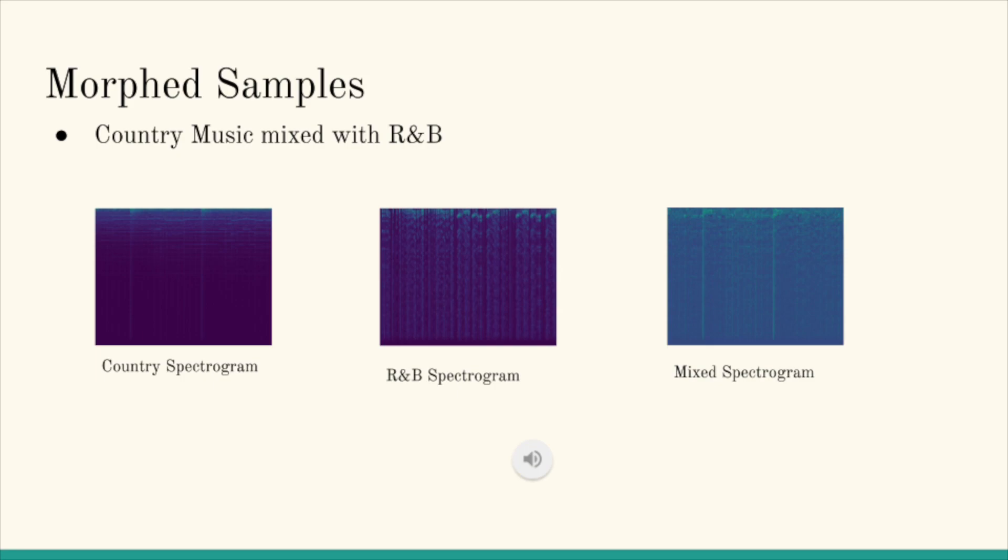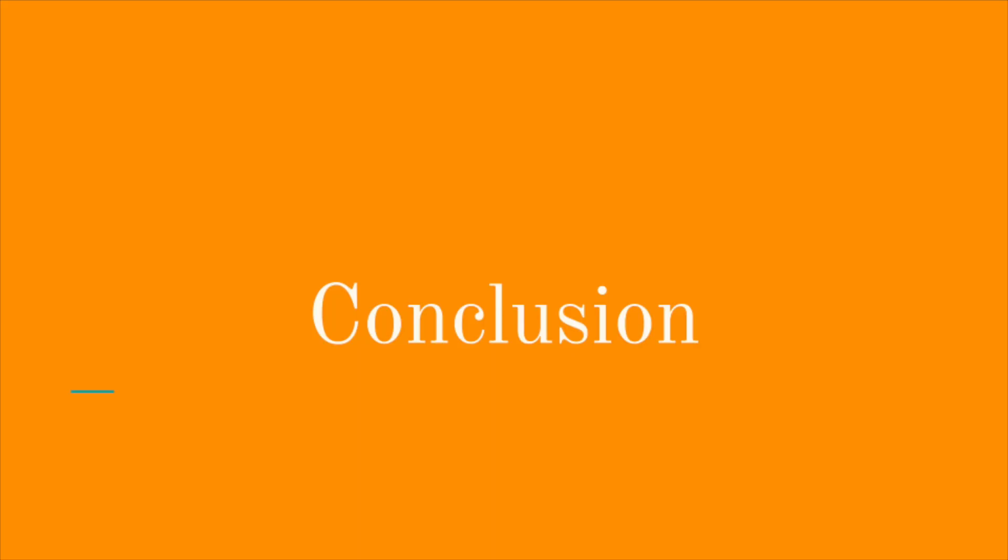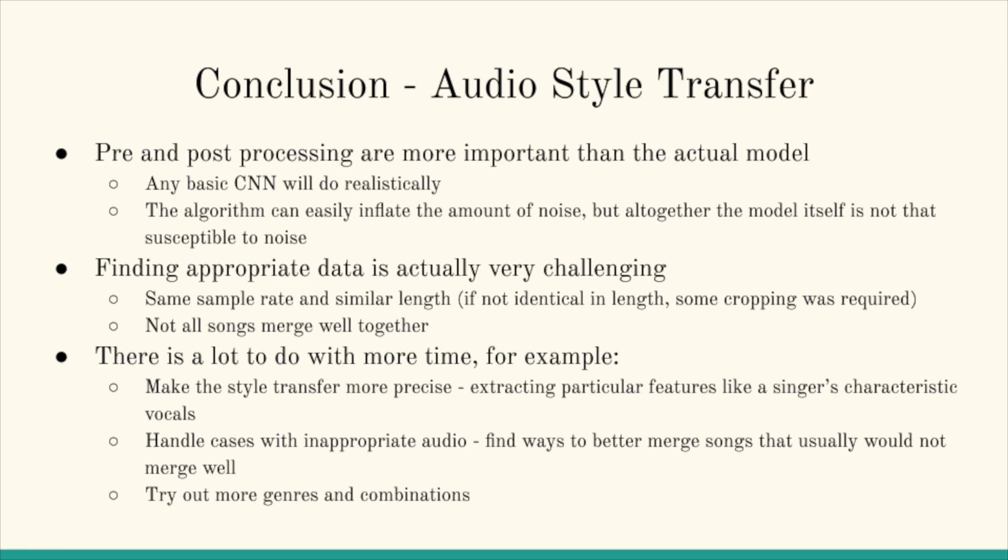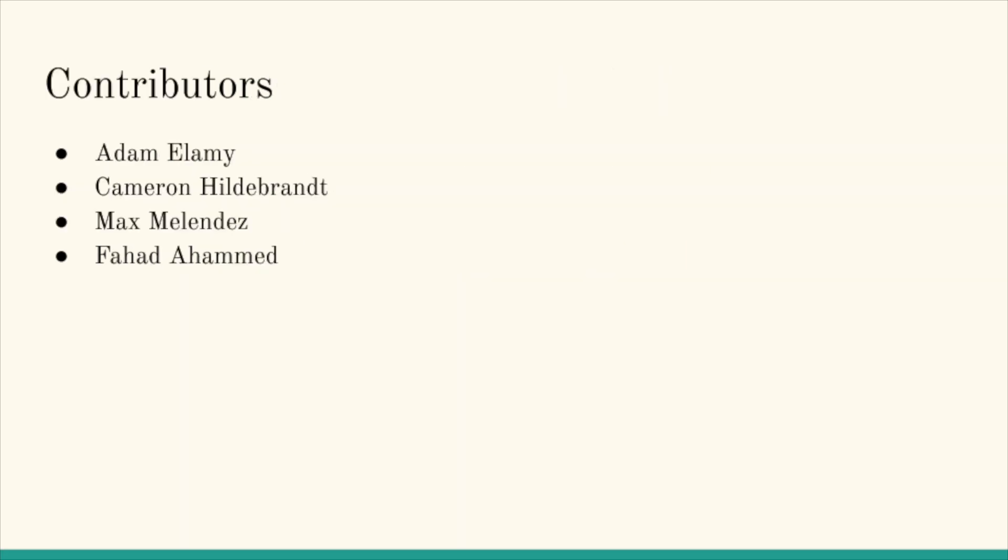So firstly, pre and post processing are more important than the actual model or CNN. Any basic CNN will do. And the algorithm really inflates the amount of noise, so many epochs are needed to ensure a good quality output. Actually, finding appropriate data is also very challenging. The data needs to have similar sample rates and similar lengths, and not all songs would merge well together. With more time, there's a lot we could do. Make style transfer more precise, handle cases with inappropriate audio, try out more genres and combinations, and do more validation. Thank you everyone for listening.